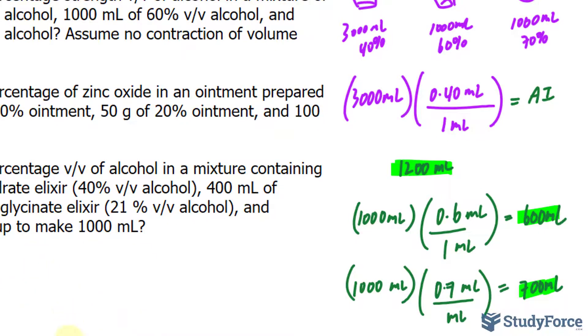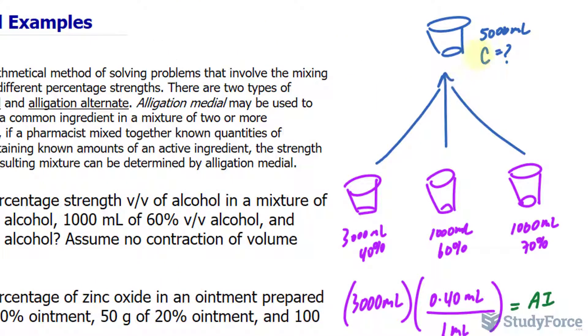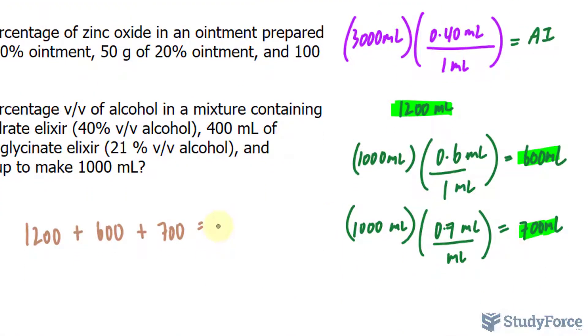Let me show you the remainder of the work over here. 1200 plus 600 plus 700, and that will equal the quantity times the concentration of that container. Remember, we don't know the concentration of that container. So I'll write down 5000 times C, which we'll solve next. 1200 plus 600 is 1800, plus 700 is 2500.